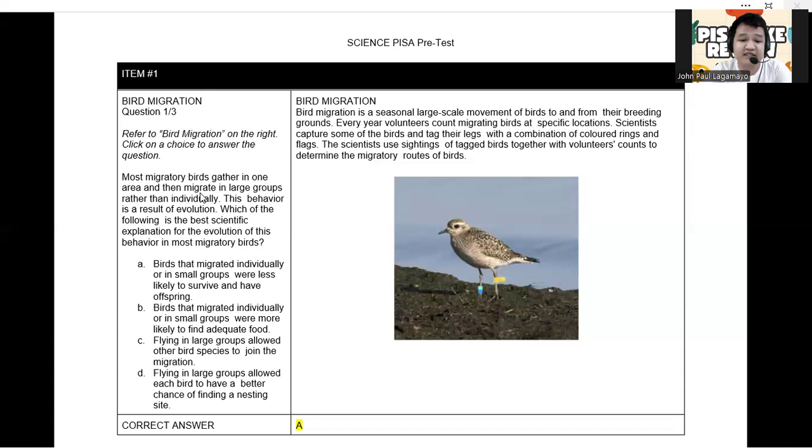So they are definitely considered as an incorrect option also. And letter D. Flying in large groups allowed each bird to have a better chance of finding a nesting site. This is still not correct because migration is primarily for seasonal survival and breeding, not for locating a nesting site of the bird. So I'm hoping that you can at least try to analyze the best possible answer here is letter A.